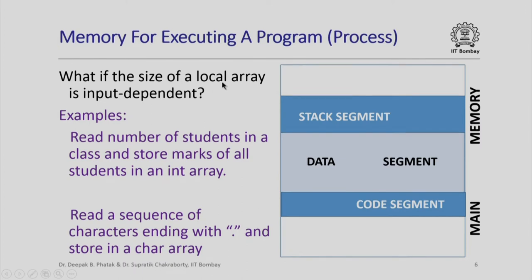But what if the size of a local array that I want to use in a function is actually dependent on the input? For example, I might want to read the number of students in a class and store the marks of all of these students in an integer array. I do not know a priori how many students there are going to be. I am going to seek this as an input from the user, and depending on how many students there are, I would like to allocate an array of an appropriate size. However, if I have to declare this array statically in my program, then I must predetermine what its size is, and more often than not we will end up putting a large value for the size so that it suffices in practice. But this is a bit wasteful of memory, because in the activation record, space for that entire large conservative estimate of the array size is actually going to be stored.